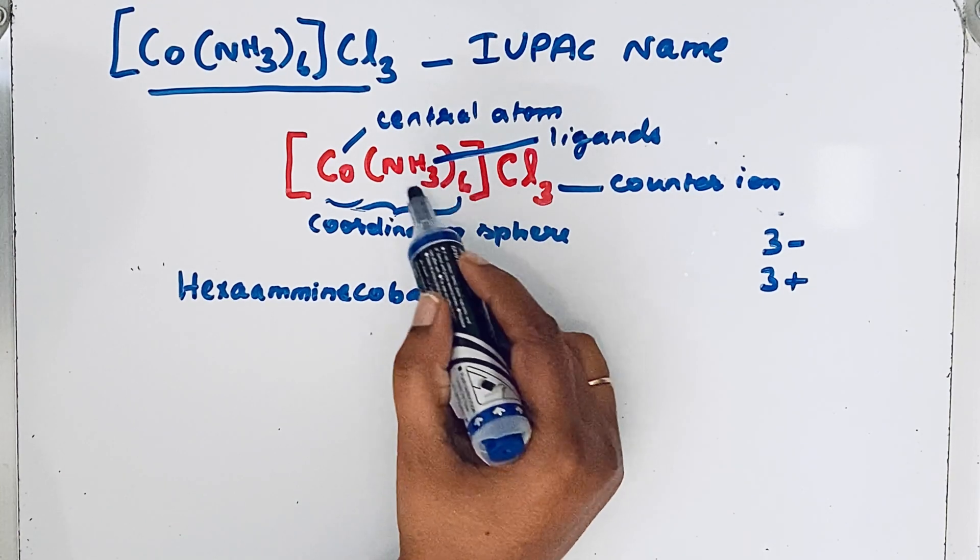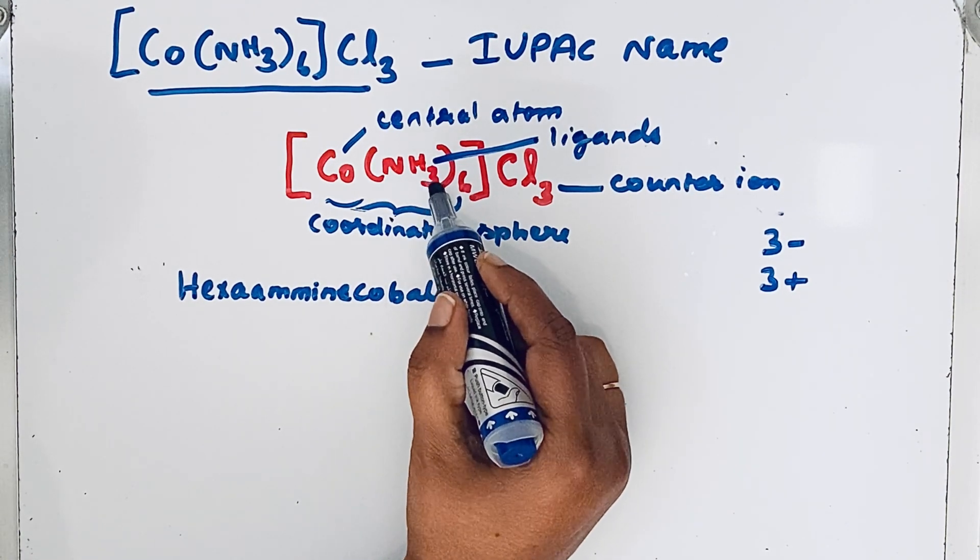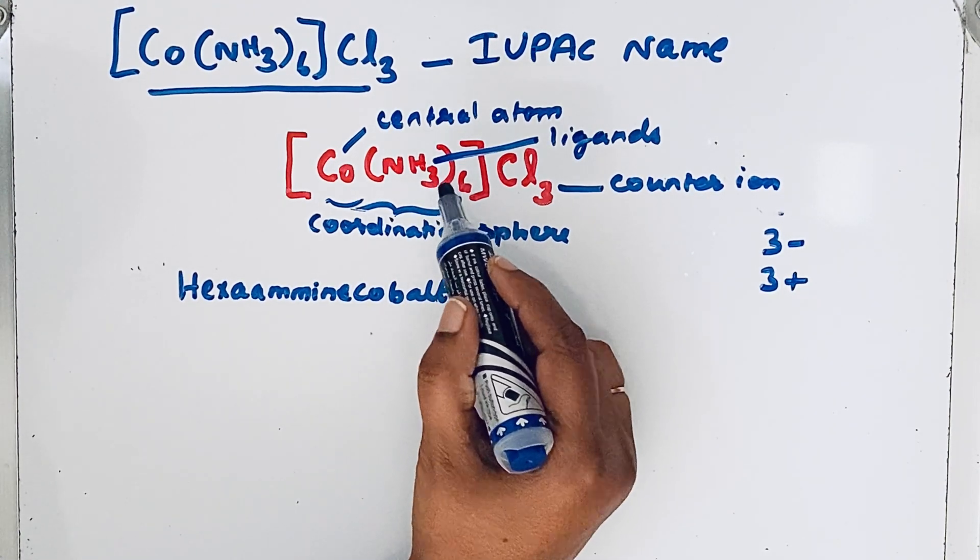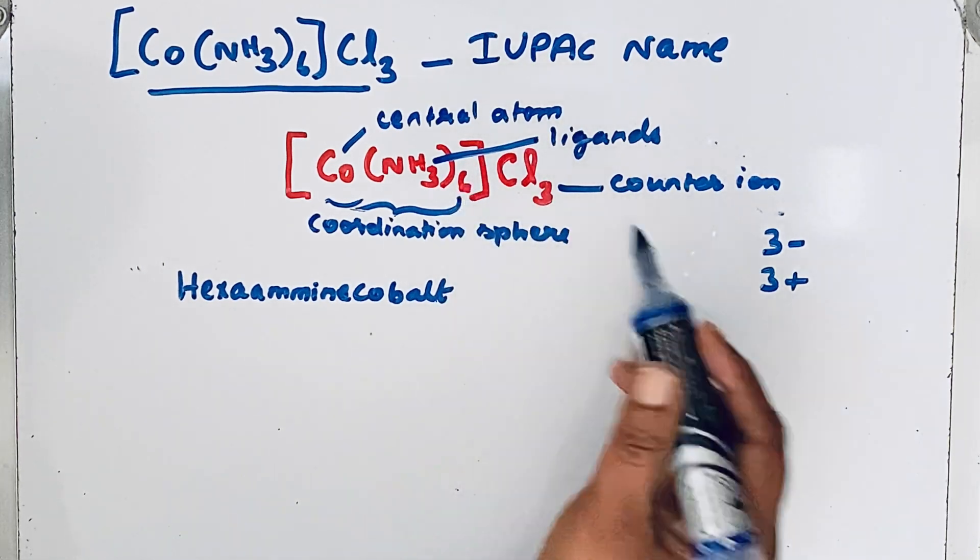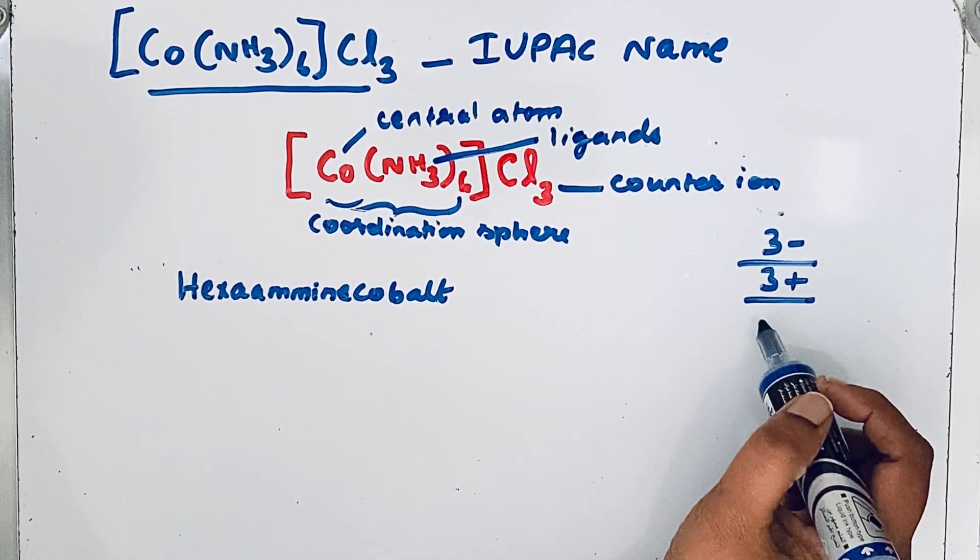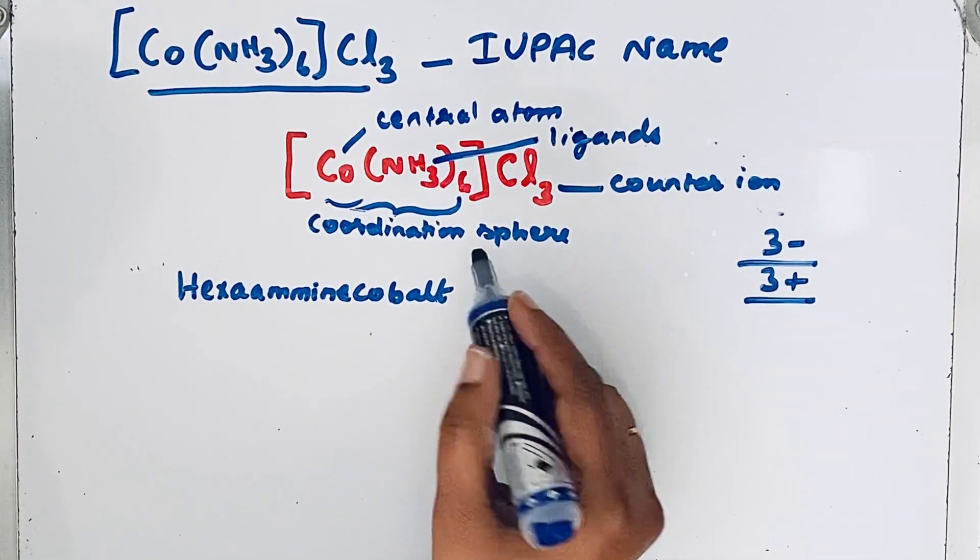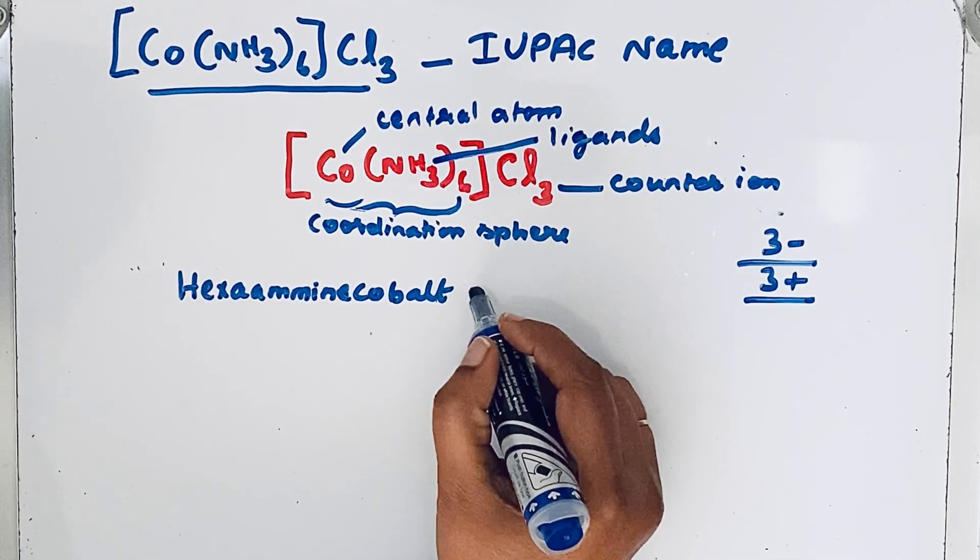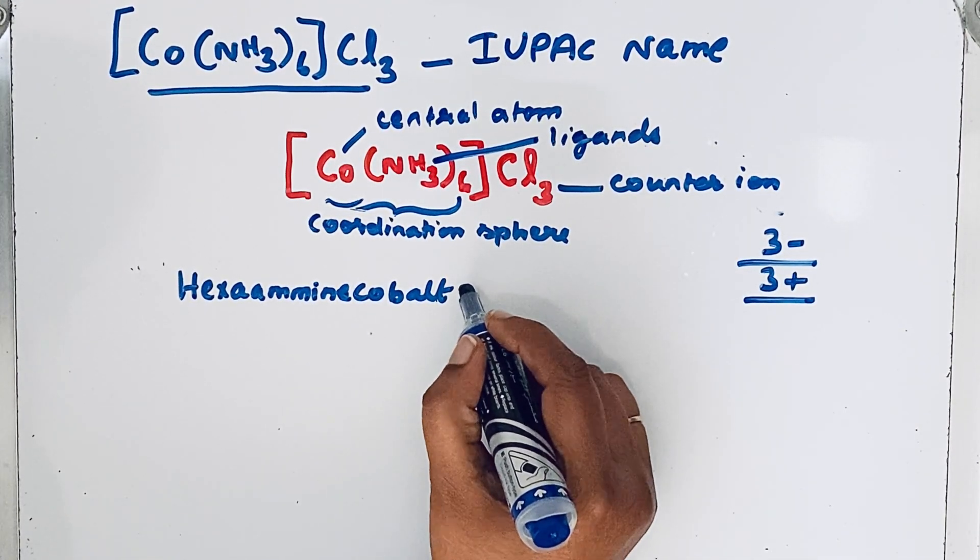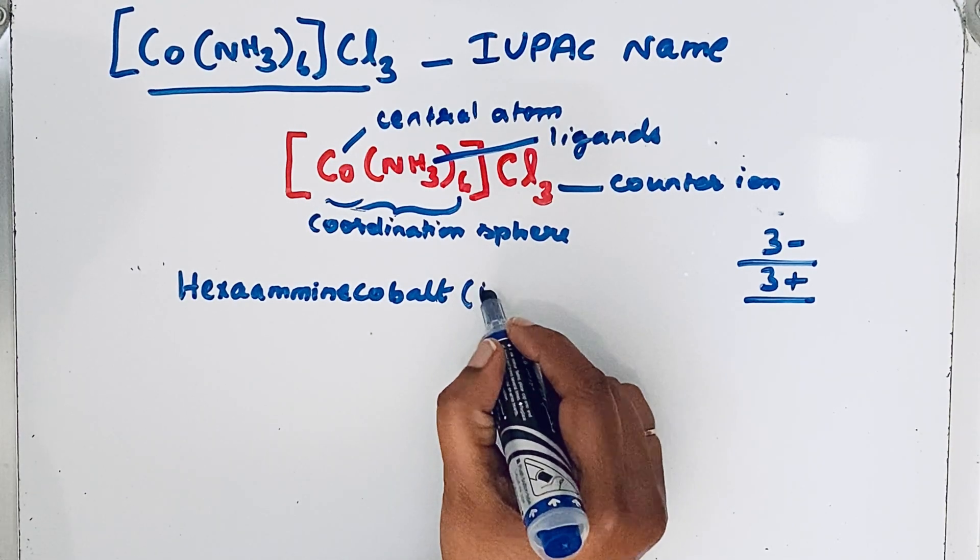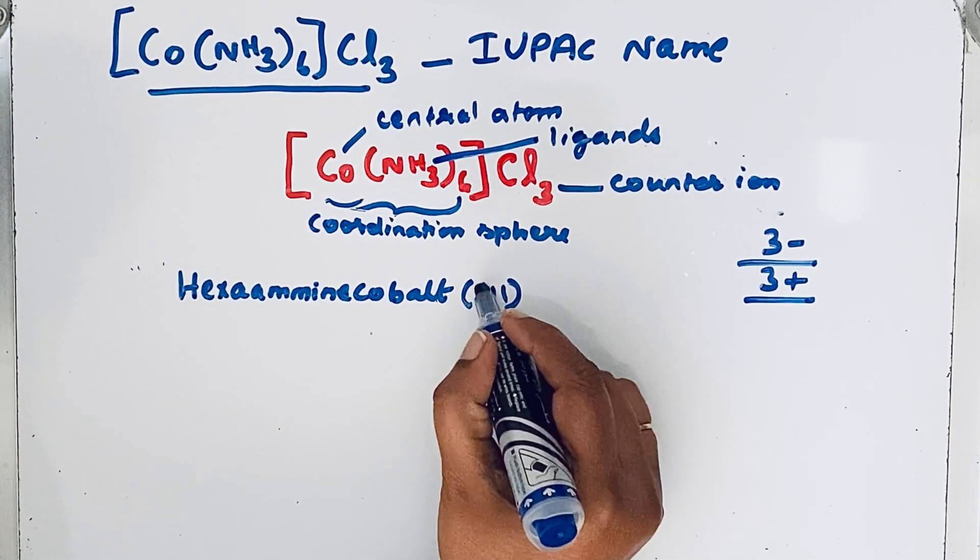If you look at the ligands, this amine is neutral, that means it carries zero charge. That is why the oxidation number of cobalt is three only. So we write it inside parentheses in roman numerals.